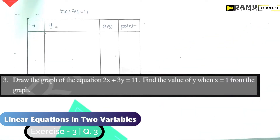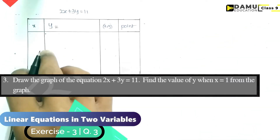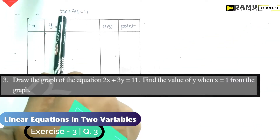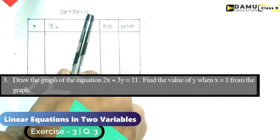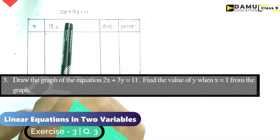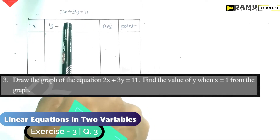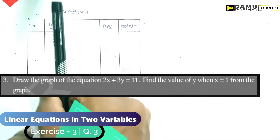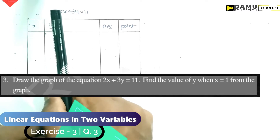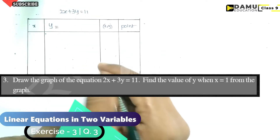In this module, we are going to discuss our third problem. Draw the graph of the equation 2x plus 3y equals 11. Then, find from the graph the value of y when x equals 1.